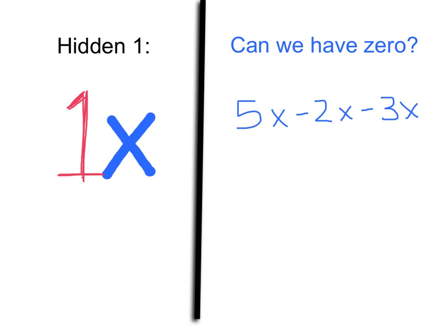If I see 5x minus 2x minus 3x, I know I can combine them because they all have an x in them. So all I'm going to do is subtract my coefficients from each other since they have the same variable. So I know that 5x minus 2x would give me 3x and I still pull down my minus 3x. And if I see that there is a 3x and I'm taking away 3x's, I know that 3 minus 3 gives me 0.